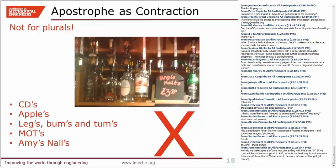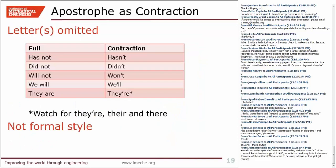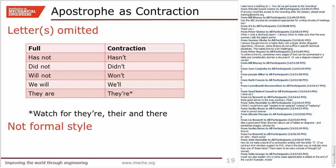Moving on to how we should use apostrophes. The first correct use is as a contraction — where one or more letters have been omitted. Shortening the word 'not' is a common example: 'has not' becomes 'hasn't,' 'did not' becomes 'didn't.' In these cases, the space and the letter 'o' are omitted. Sometimes you also get a change in spelling, such as 'will not' becomes 'won't.' Other examples of contractions are 'we'll' for 'we will,' and 'they're' for 'they are.'